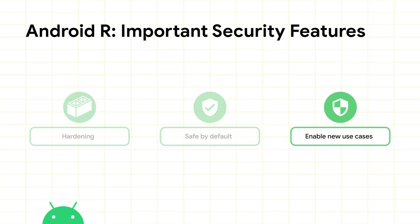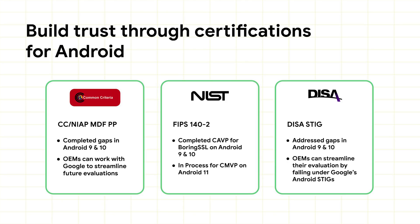Finally, security is often an invisible feature — we only feel its impact when it fails. This year, we've started to seek opportunities to make security more visible to our users. The platform today is safe enough for us to begin thinking of our everyday experiences and exploring which of those would be easier on mobile. When you think about building trust around a device's security stance, certifications are a great form of third-party validation.